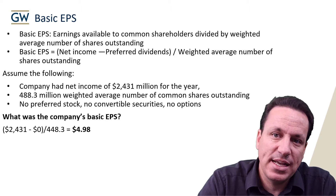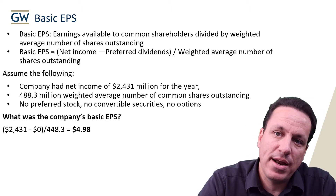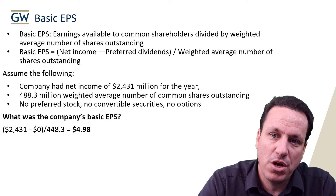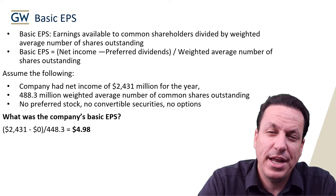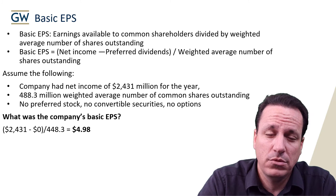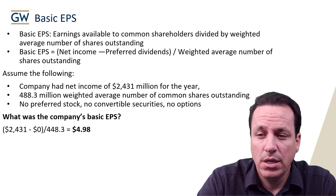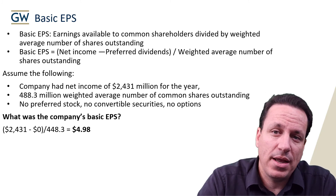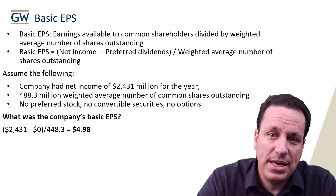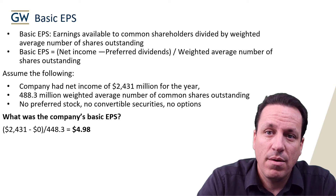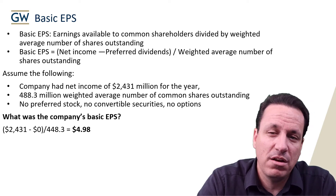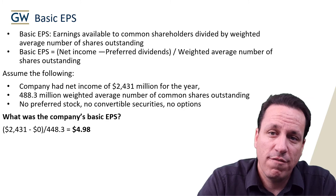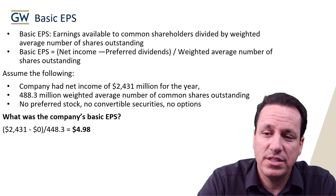Each share of stock essentially earned $4.98. Does that mean you got paid that directly? No. That's not necessarily a dividend that got paid out — that's just what the company made per share that was outstanding. So the company made $4.98 for every share outstanding.